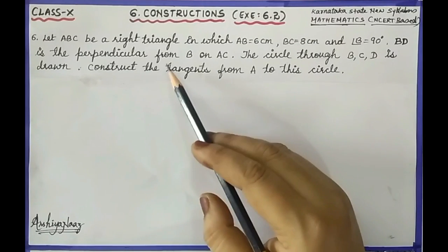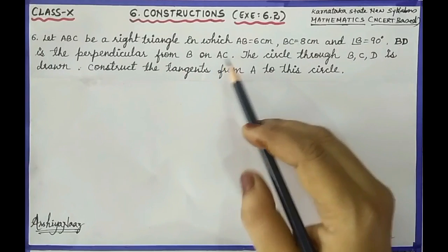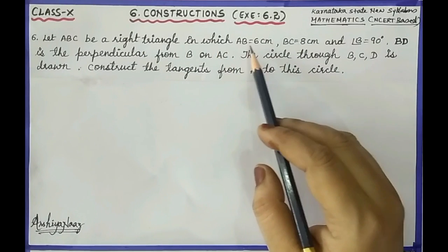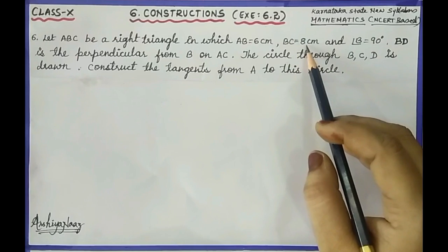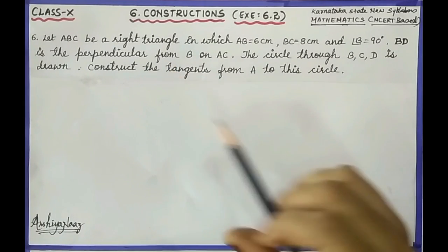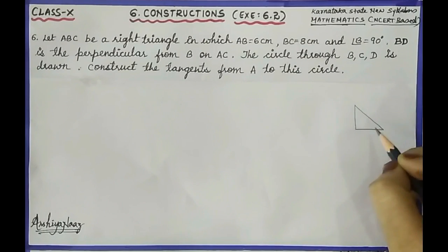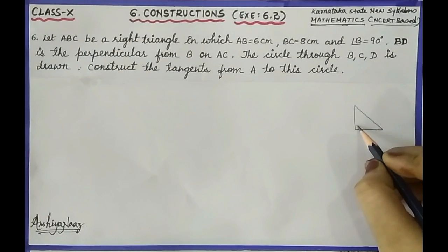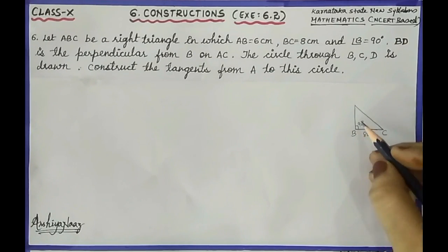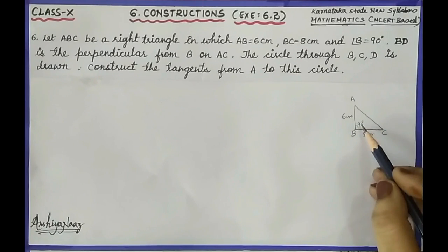First we have to understand the problem and see what information is given here to do the constructions. Here, first we have to construct triangle ABC in which AB is given as 6 cm, BC is given as 8 cm, and angle B is equal to 90 degrees. So first let us draw a rough diagram of this right triangle, where angle B is 90 degrees, BC is 8 cm, and AB is 6 cm.